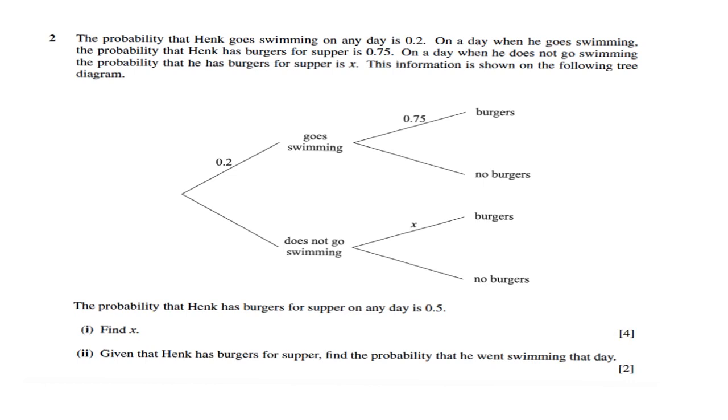The probability that Hank goes swimming on any day is 0.2. On a day when he goes swimming, the probability that Hank has burgers for supper is 0.75. On a day when he does not go swimming, the probability that he has burgers for supper is X. This information is shown on the following tree diagram. The probability that Hank has burgers for supper on any day is 0.5, so find X.